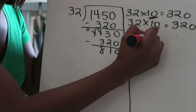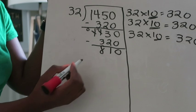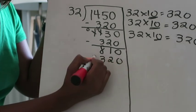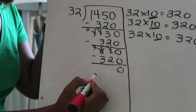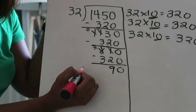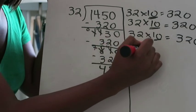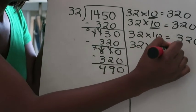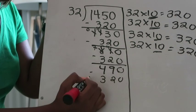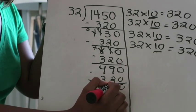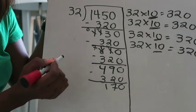32 times 10 again, that's 320. I want to underline that 10. Subtract my 320 out. 0 minus 0 is 0. Got to regroup there. 11 minus 2 is 9, 7 minus 3 is 4. I'm left with 490. Multiply that divisor by 10 again, it's 320. Subtract 320 from 490. 0 minus 0 is 0, 9 minus 2 is 7, 4 minus 3 is 1. And I'm left with 170.